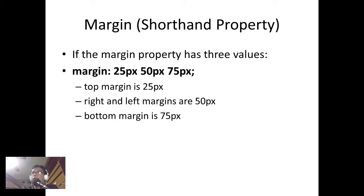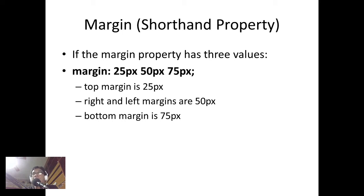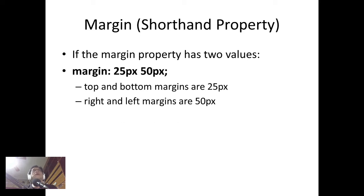If the margin property has three values — for example, margin: 25px 50px 75px — the first value is the top margin, the second value applies to both the right and left margins (so left and right are always identical), and the third value is the bottom margin (75px).